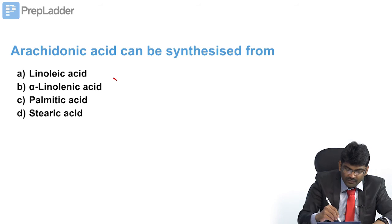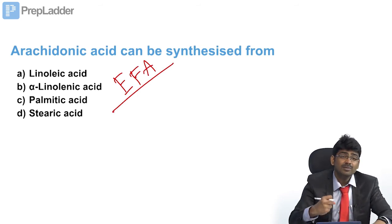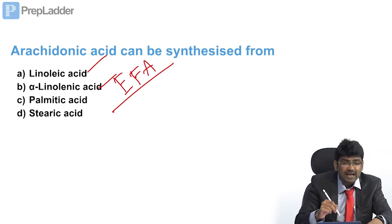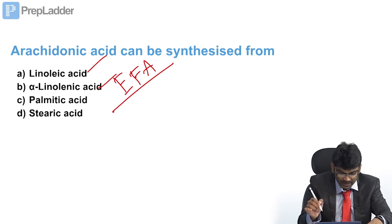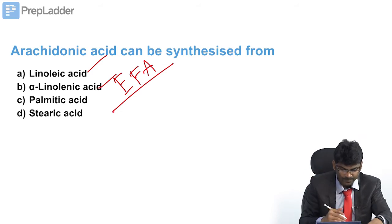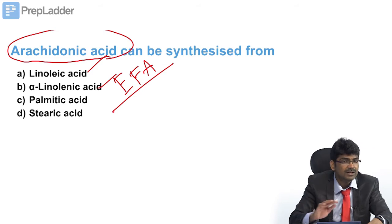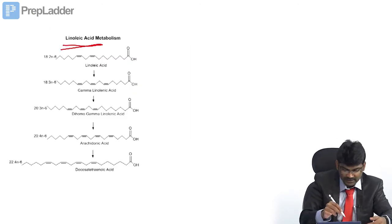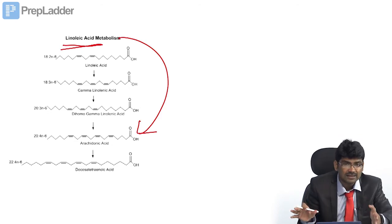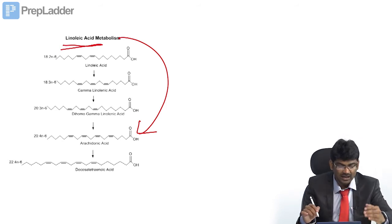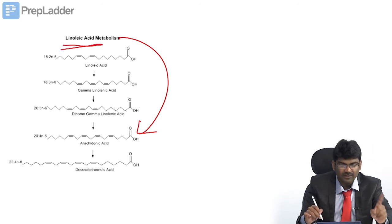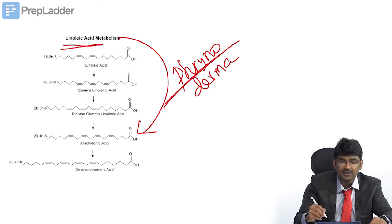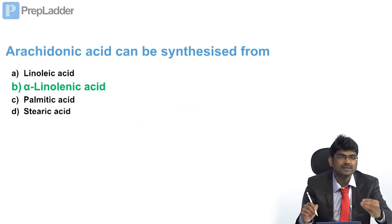Essential fatty acids are those which cannot be synthesized in the human body and must be taken in the diet. Linoleic acid and alpha-linolenic acid cannot be synthesized in the body and must come from diet. Arachidonic acid was initially considered essential, but it is not, because it can be synthesized in the body from linoleic acid. Deficiency of essential fatty acids produces phrynoderma — dermatological manifestations. 'Phrino' means toad, so it is a toad-like skin condition.